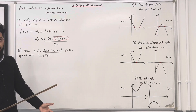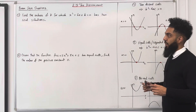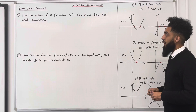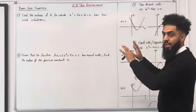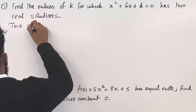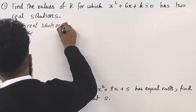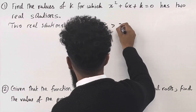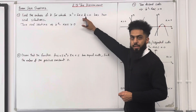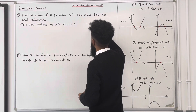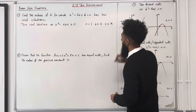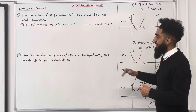Let's have a look at some exam-style questions. Question 1: find the values of k for which x squared plus 6x plus k equals 0 has two real solutions. Two real solutions implies that b squared minus 4ac is greater than 0. Reading off a, b and c: a is 1 (coefficient of x squared), b is 6 (coefficient of x), and c is k (the constant term). Substituting into the inequality: 6 squared minus 4 times 1 times k has to be greater than 0.